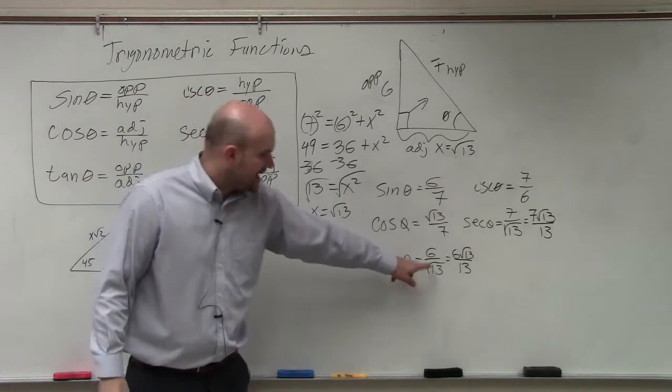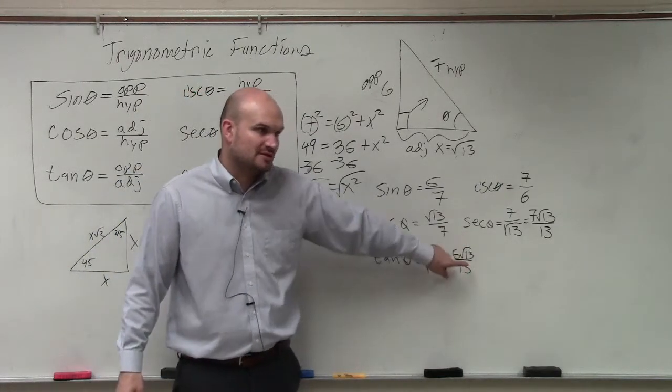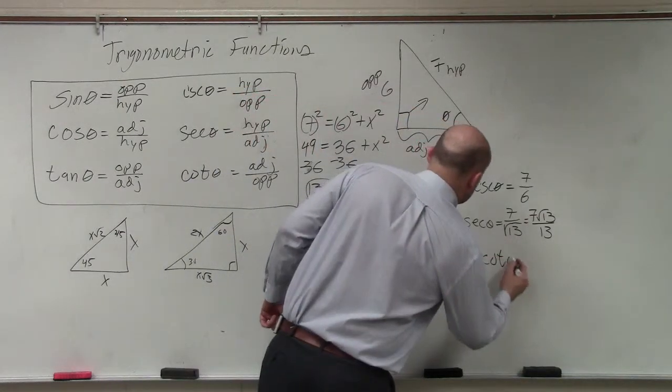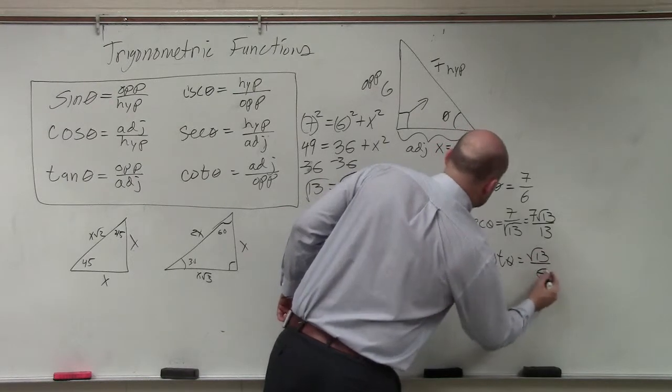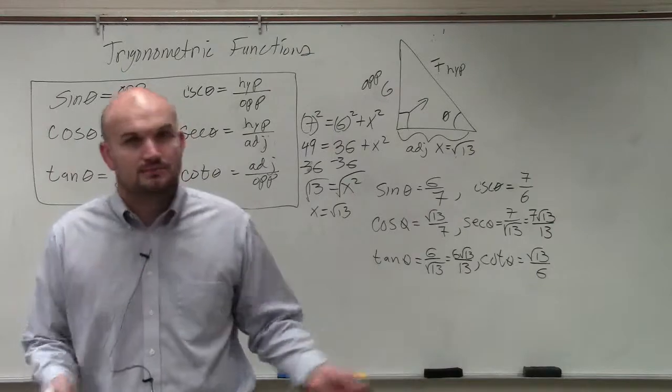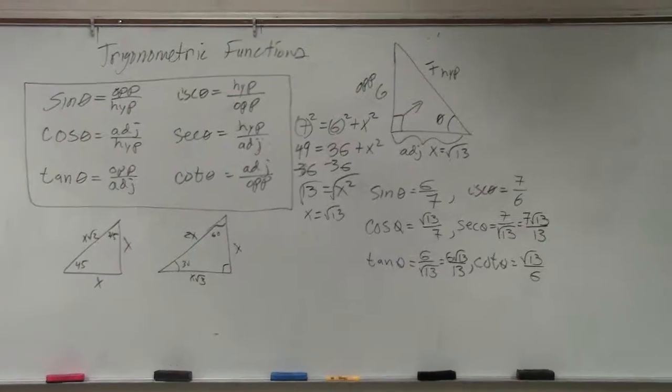And then tangent, I can just reciprocate this. I don't want to reciprocate this one, because then I'd have a radical in the denominator. So I'll reciprocate this one for cotangent. That's going to be the square root of 13 over 6. And that's it. Done. It's a little bit of tedious work.